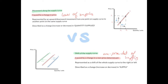The next point of difference: a movement along the supply curve is represented by an upward or downward movement from one point on the supply curve to another point on the same supply curve. For example, an increase in price from P1 to P2 will increase quantity supplied from Q1 to Q2 — this is a movement along the same supply curve. A shift of the supply curve, on the other hand, is represented as a shift of the whole supply curve to either the right or the left. A shift to the right is an increase in supply; a shift to the left is a decrease in supply.